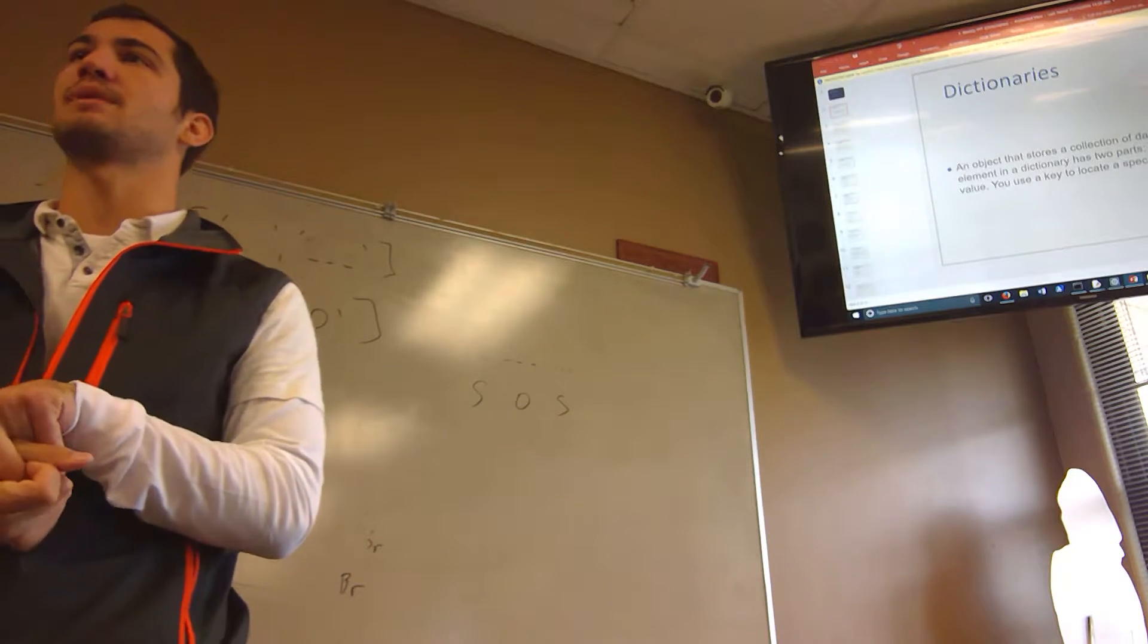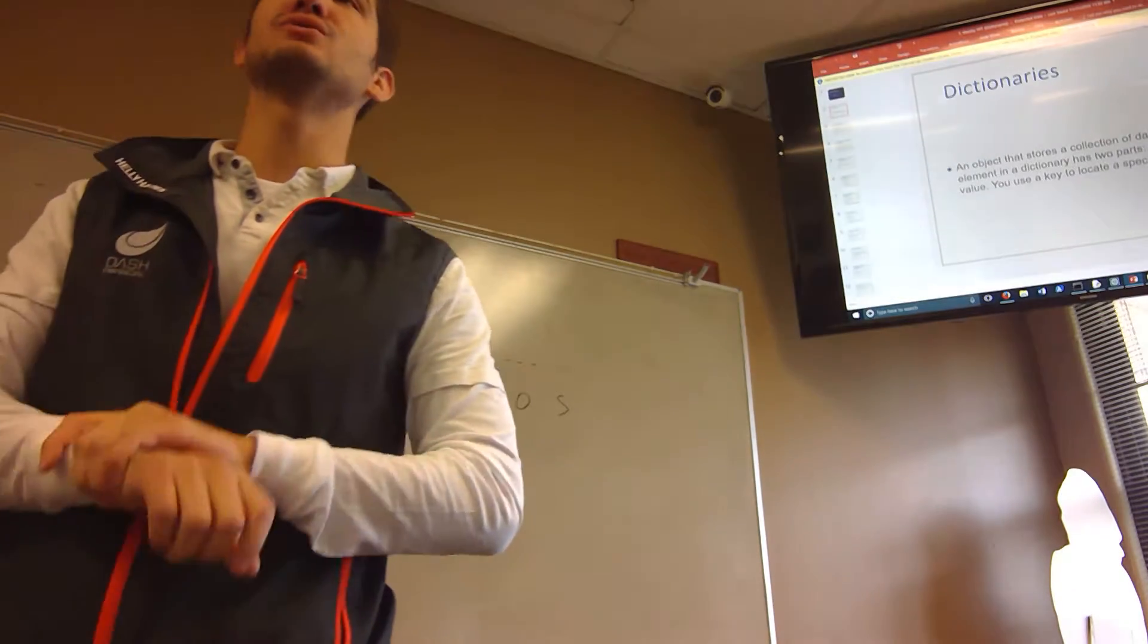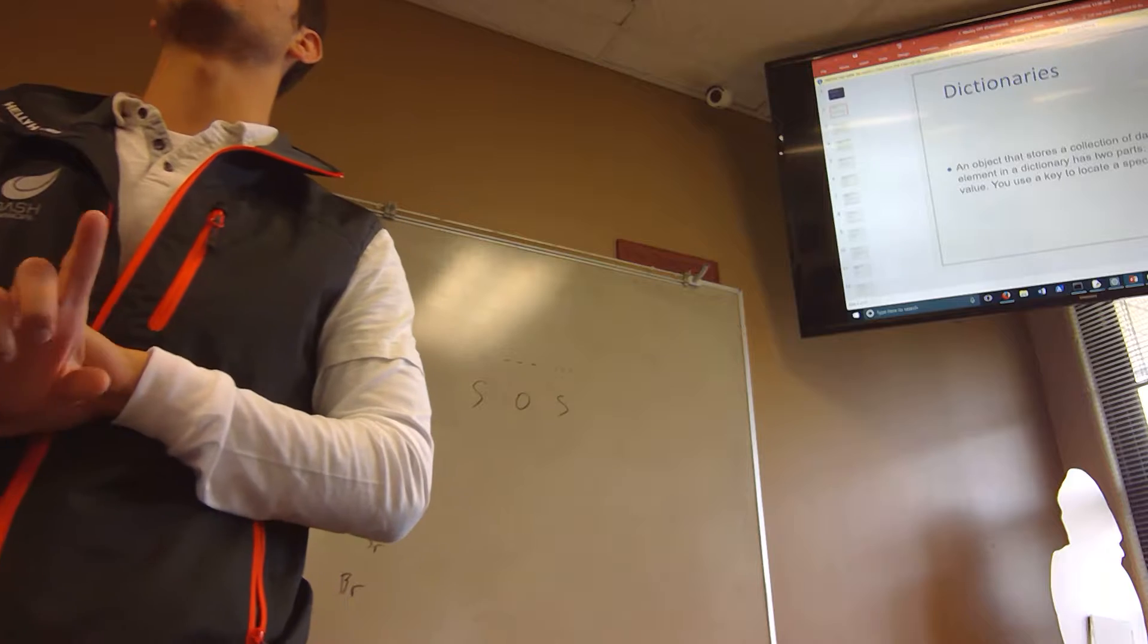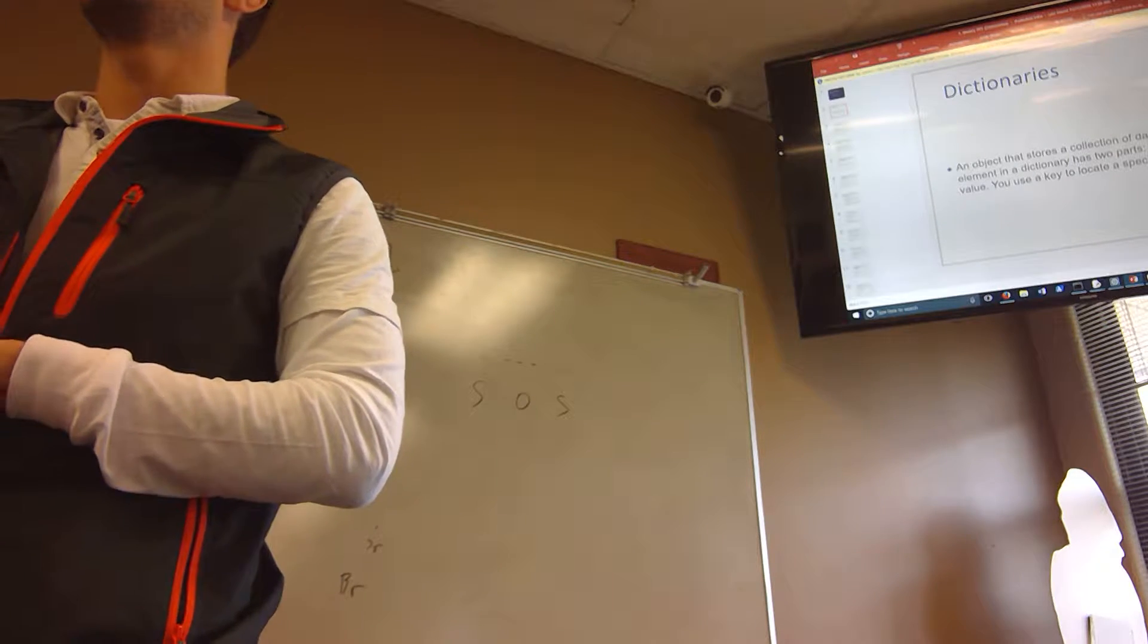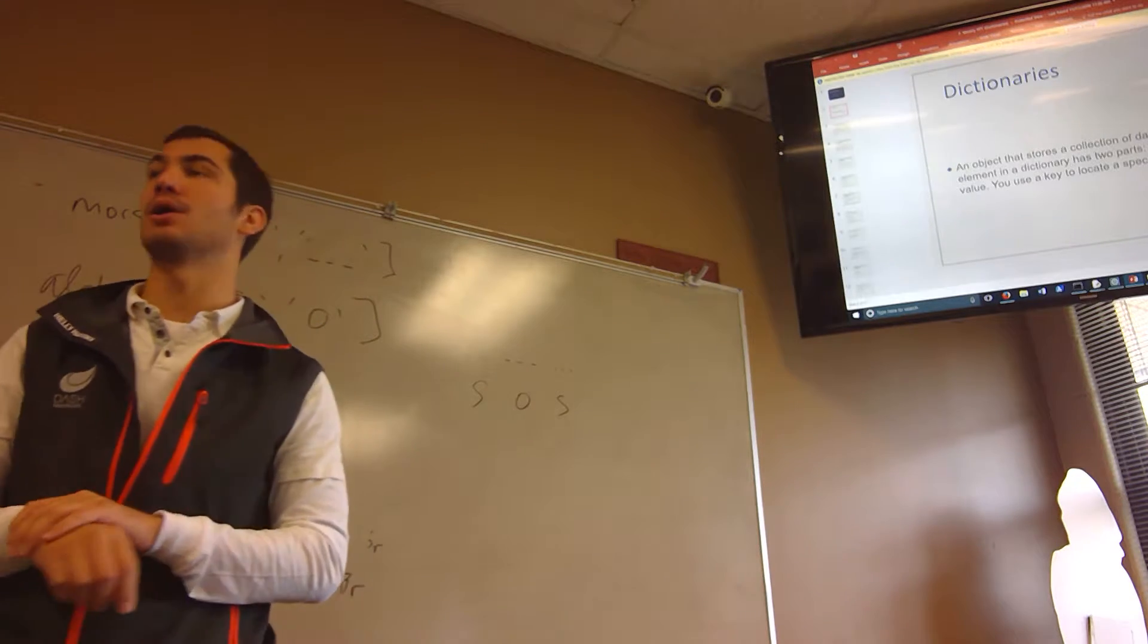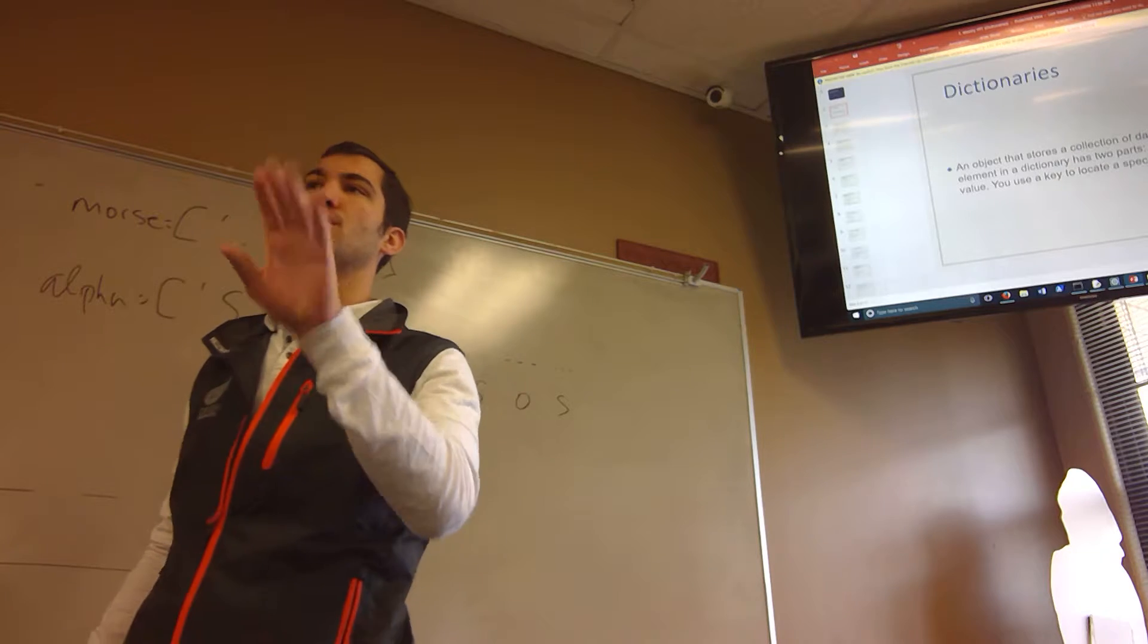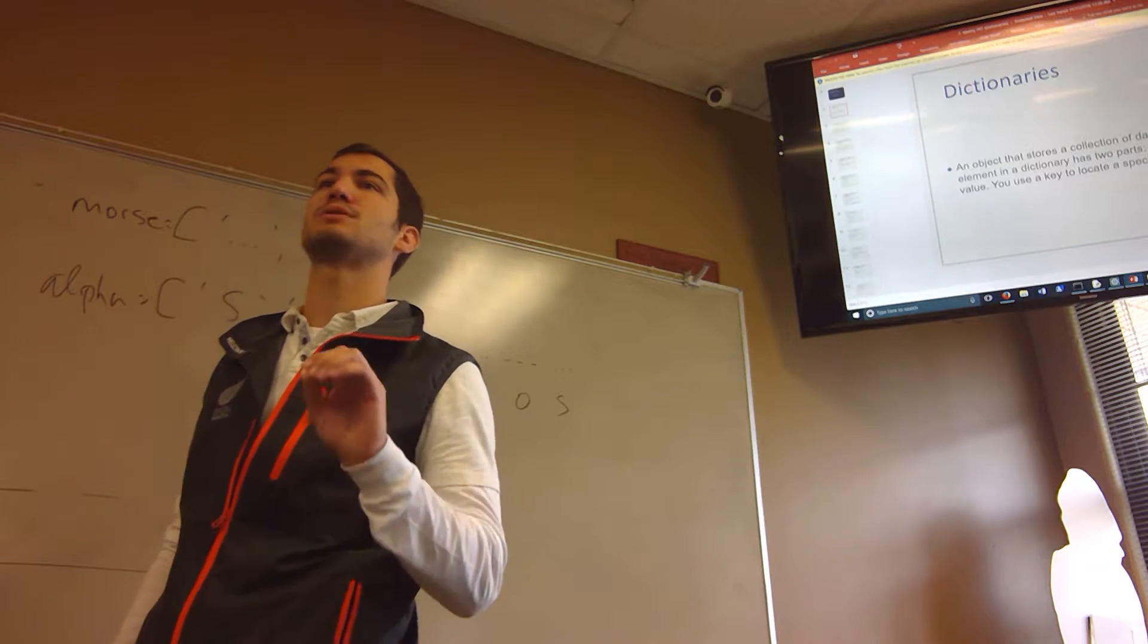You use a key to locate a specific value. What does that mean? With lists and strings we are able to find it with an index. I could go string brackets one and it's going to show the first character. You can't do that with a dictionary. It's stored in a random order.